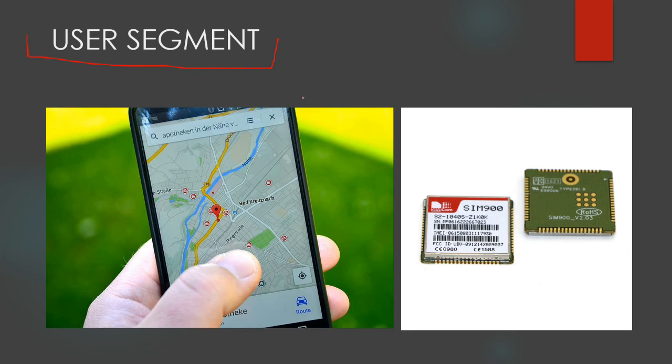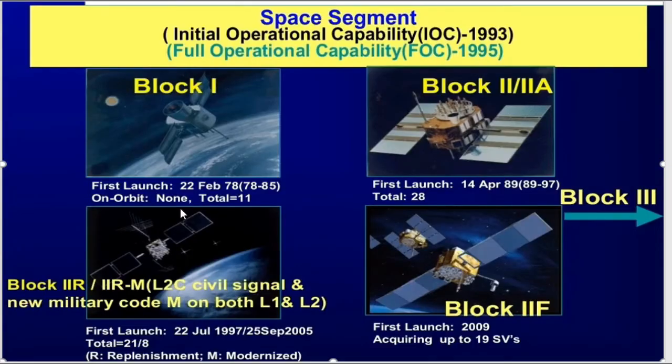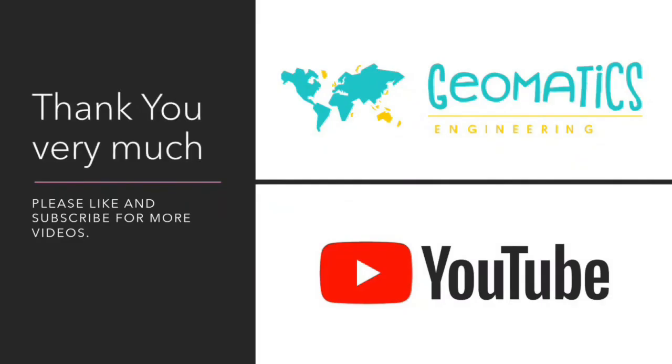After the control segment comes the third user segment, which consists of devices connected to provide location. GPS receivers provide accurate location in the user segment. All applications are used for position, navigation in airplanes, and search and rescue missions. For public users, the accuracy is less; military users get higher accuracy. I hope you understand GPS space segment, control, and user segment. In the next lecture, we'll discuss more. Please like and subscribe for more videos.